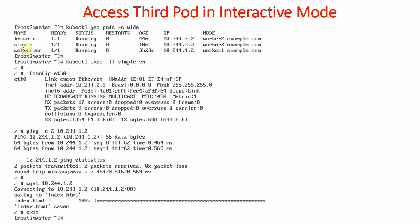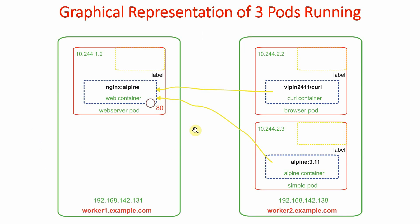We enter the third pod using 'kubectl exec -it simple -- sh'. Running 'ifconfig eth0' shows the address 10.244.2.3. We can ping the web server pod using 'ping -c 2' with its address, and two packets are sent successfully. We also use the 'wget' command — running 'wget 10.244.1.2' to check if the web server is working. It downloads the page, confirming wget is also working.